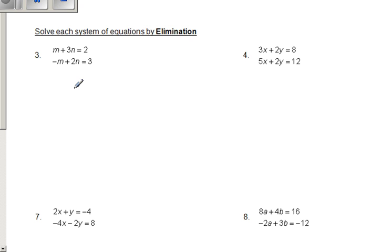When you have opposites, what you do is you add down, so M plus negative M, those are going to cancel out. So 3N plus 2N gives me 5N, and then 2 plus 3 gives us 5 again. At this point, you're going to go ahead and divide by 5 to solve for your N, and you get N equals 1.